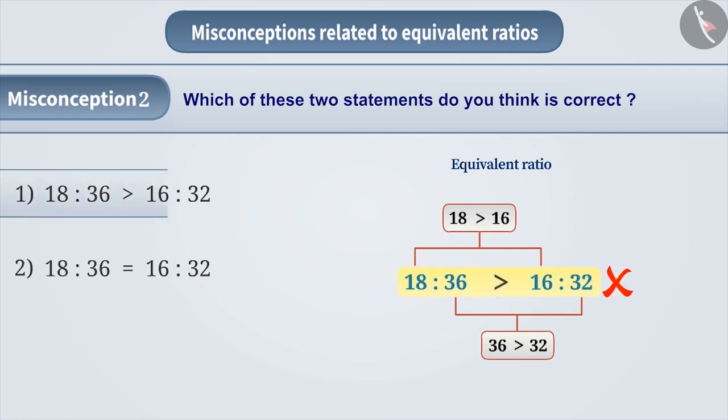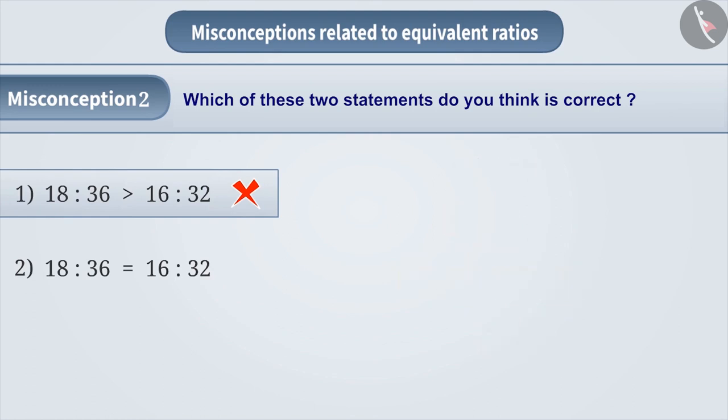To get the correct answer, we have to convert both the ratios into fractions and make their denominators the same. 18 is to 36 is equal to 18 by 36, which is equal to 1 by 2.